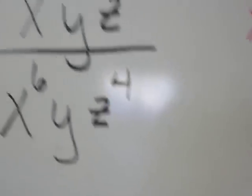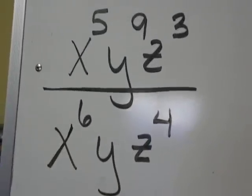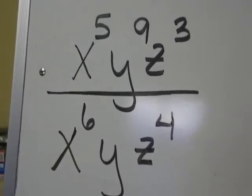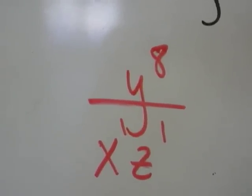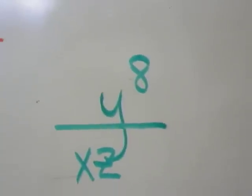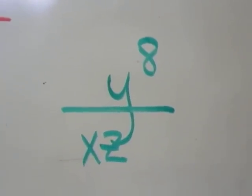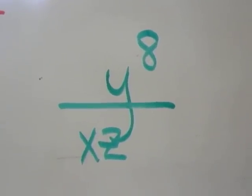But wait, I didn't write the one in the problem. Should I write the ones now? No. The final answer is just y to the 8th, over x z. The ones are implied.